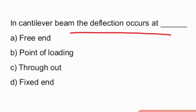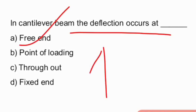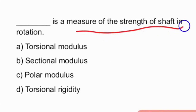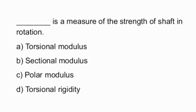In a cantilever beam, the deflection occurs at the free end. Polar modulus is a measure of the strength of the shaft in rotation.